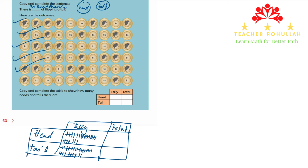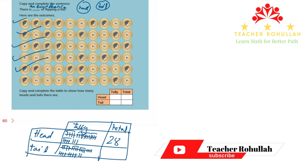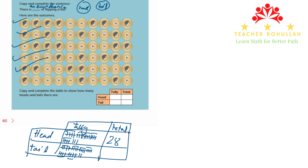Now let's count how many heads and tails we have in total. Each group of tally marks has five. We have five groups of five, which is 25, plus three more, giving us 28 heads. For tails, six groups of five is 30, plus two more, gives us 32 tails. So in total we have 28 heads and 32 tails. We just had to record the data as shown in the figure.